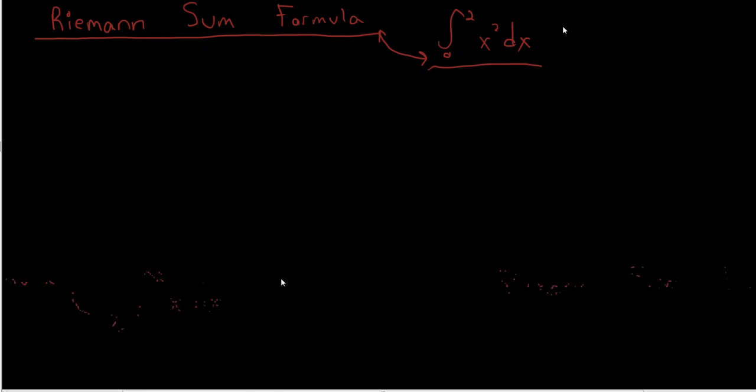So what we're going to be doing is, if we look at the graph of x squared, which is 2, 0, what we're looking for is the area under the curve right here.